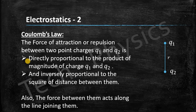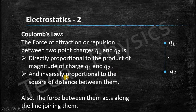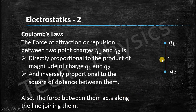In the last lecture we saw Coulomb's law. The statement of Coulomb's law is: the force of attraction or repulsion between two point charges Q1 and Q2 is directly proportional to the product of the magnitude of charges Q1 and Q2, and inversely proportional to the square of the distance between them. The force between them acts along the line joining them.